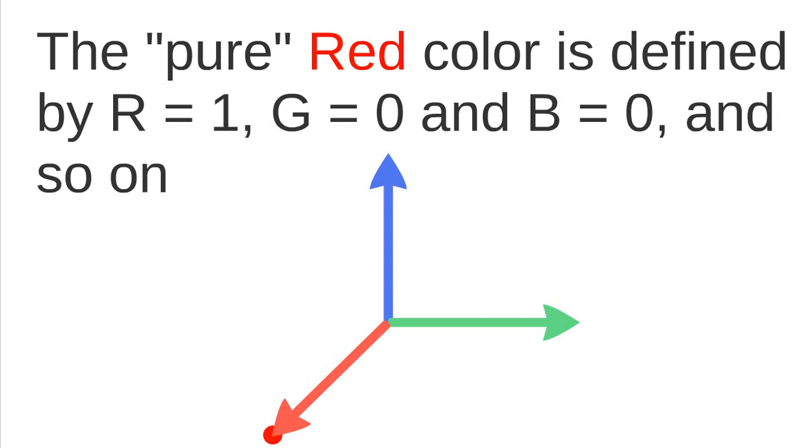If we assume a different point in this 3D space, we can have, for example, G equal to 1 and the other colors equal to 0, so we will have the green color.